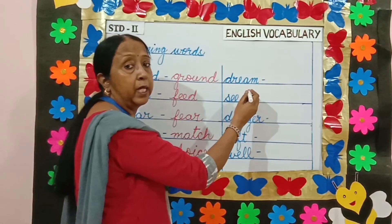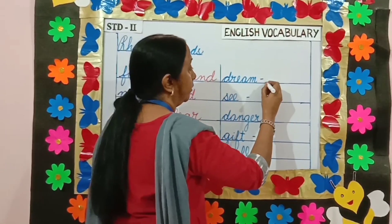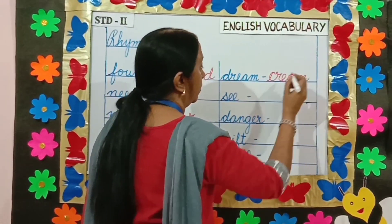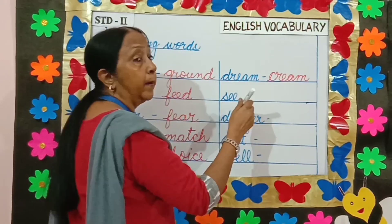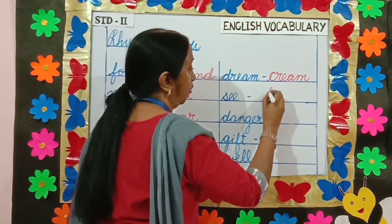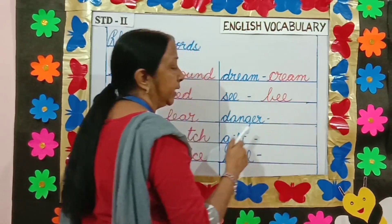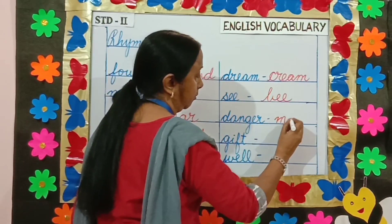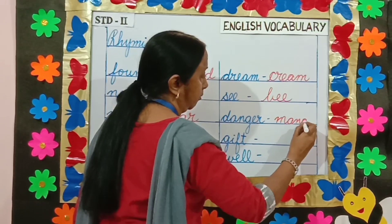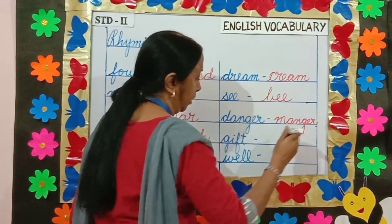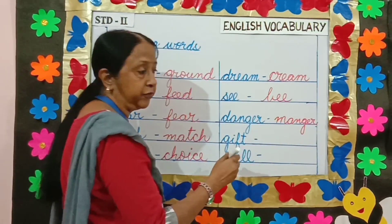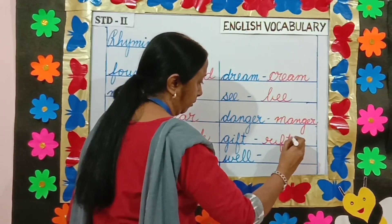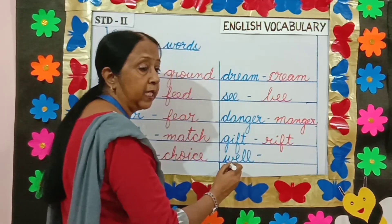Dream and cream. Danger and manger. Gift and rift. Well and sell.